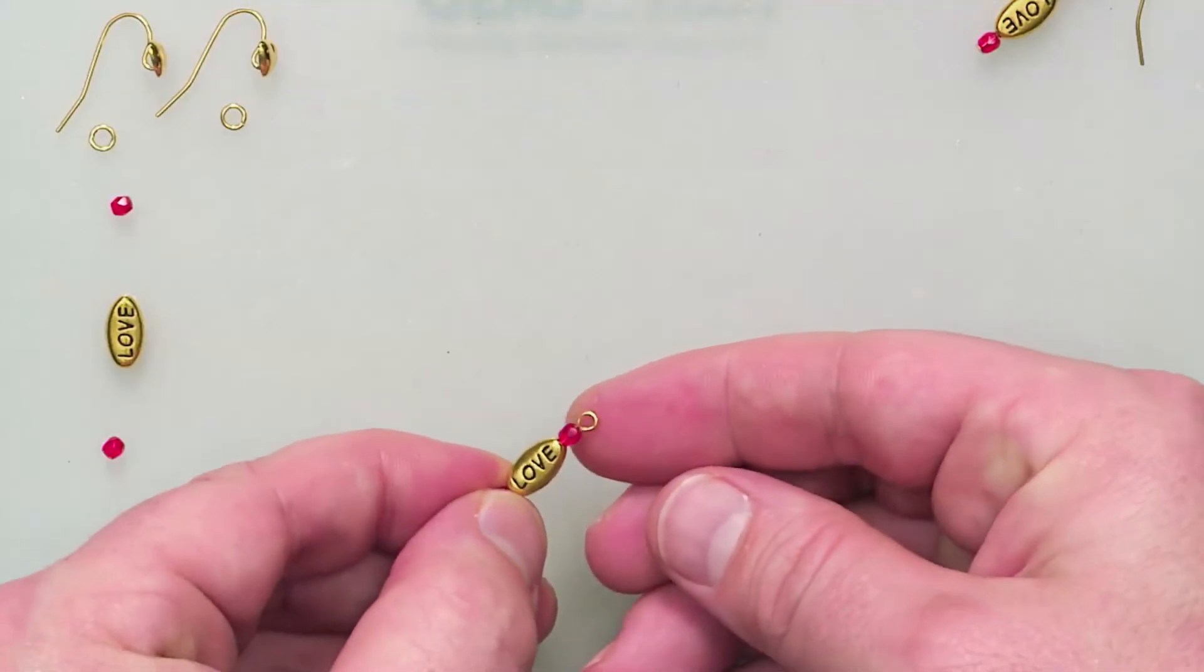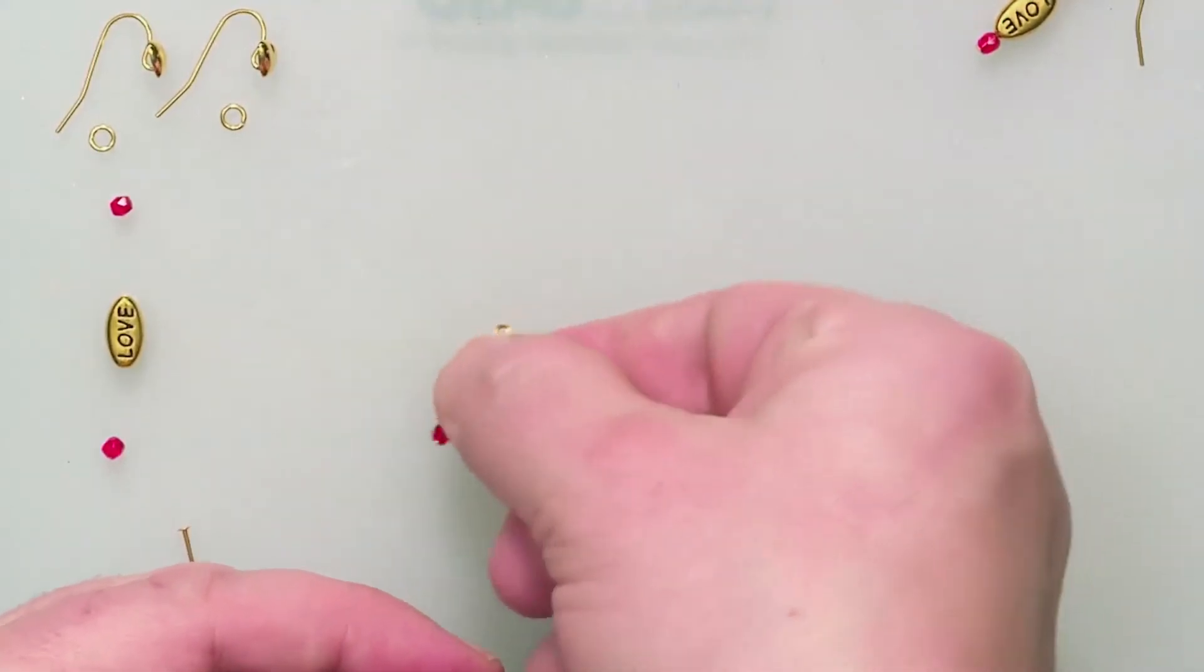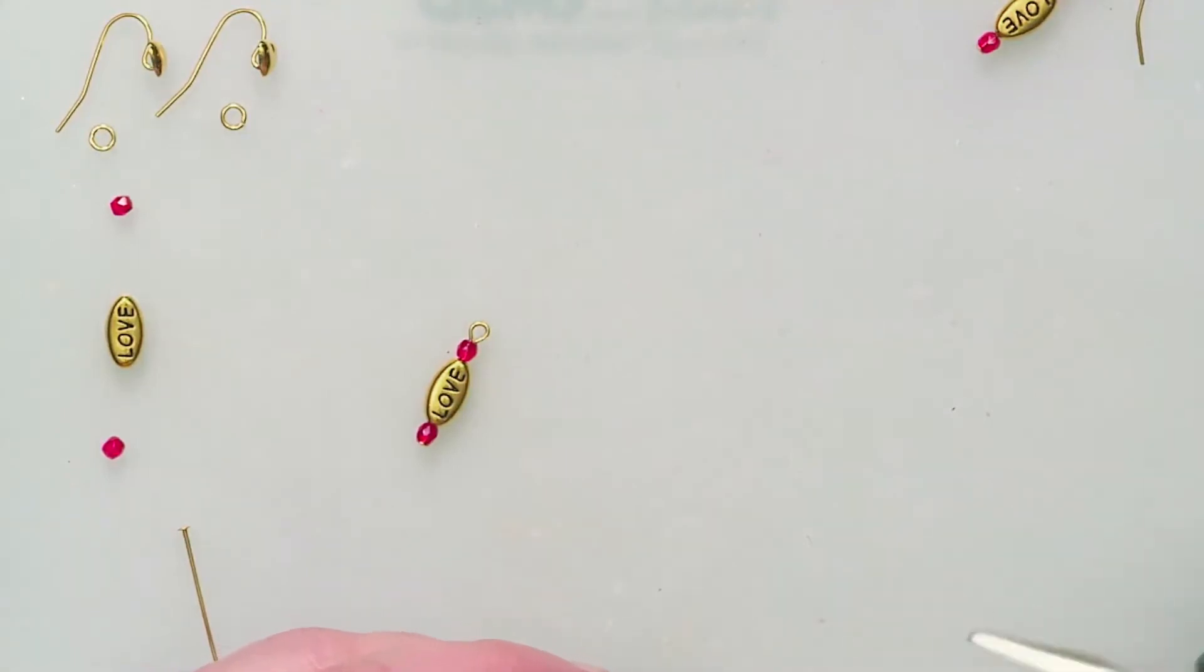So we've got that component built with a nice little simple loop on the end there. We'll go ahead and leave that aside, we'll just open up our jump ring.